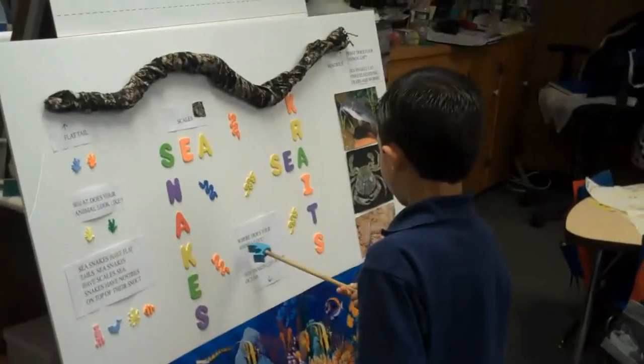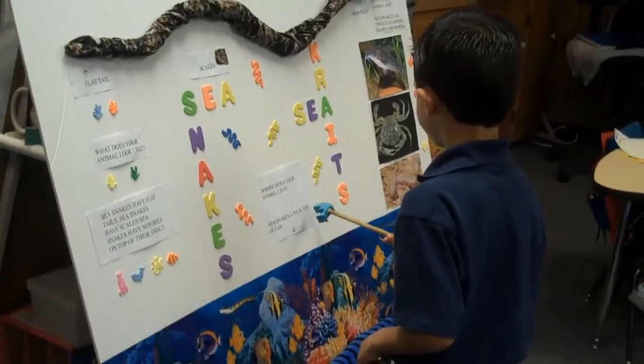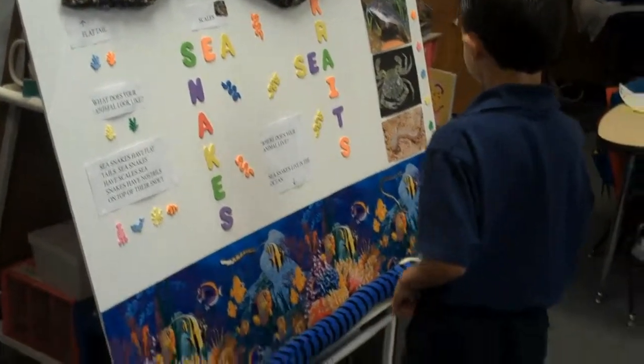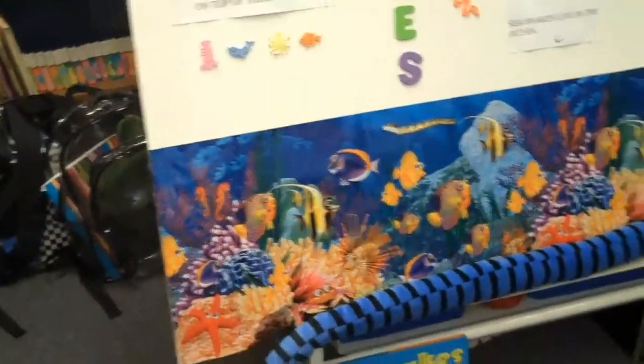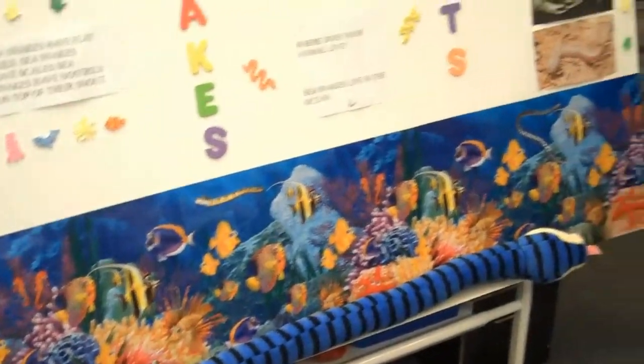Where does your animal live? Sea snakes live in the ocean. Look at that beautiful ocean you have there. There's two sea snakes too. Very nice.